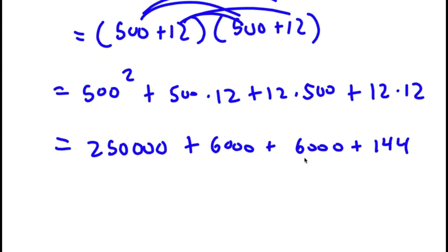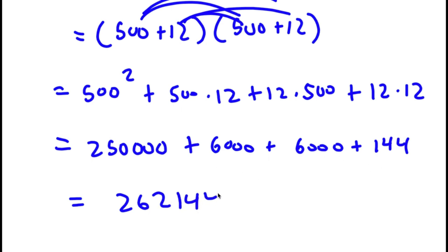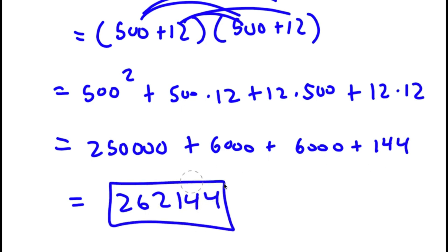So now 500 times 500 is 250,000, plus 500 times 12 which is 6,000, plus again 6,000, plus 144. Now 6,000 plus 6,000 is 12,000, and 12,000 plus 250,000 is 262,000. So I have 262,144. So this is my answer.